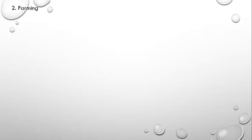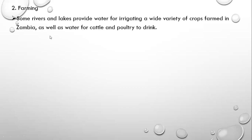Another important value of these drainage features is farming. Most farmers during the period when there is no rainfall use irrigation, watering crops using water from these drainage features. Some rivers and lakes provide water for irrigating a wide variety of crops farmed in Zambia, as well as water for cattle and poultry to drink.